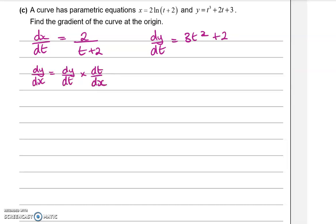Now we're looking for the gradient of the curve, which will be dy/dx. And to get that, we need dy/dt times dt/dx. So that is 3t squared plus 2 multiplied by... I didn't flip it. So this is dt/dx. So we need to flip that over: t+2 over 2.